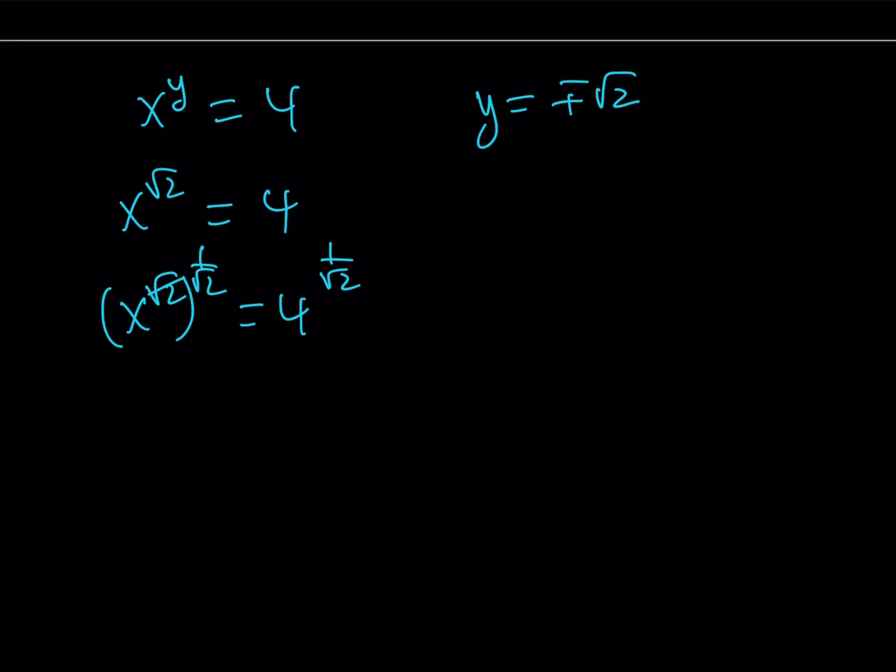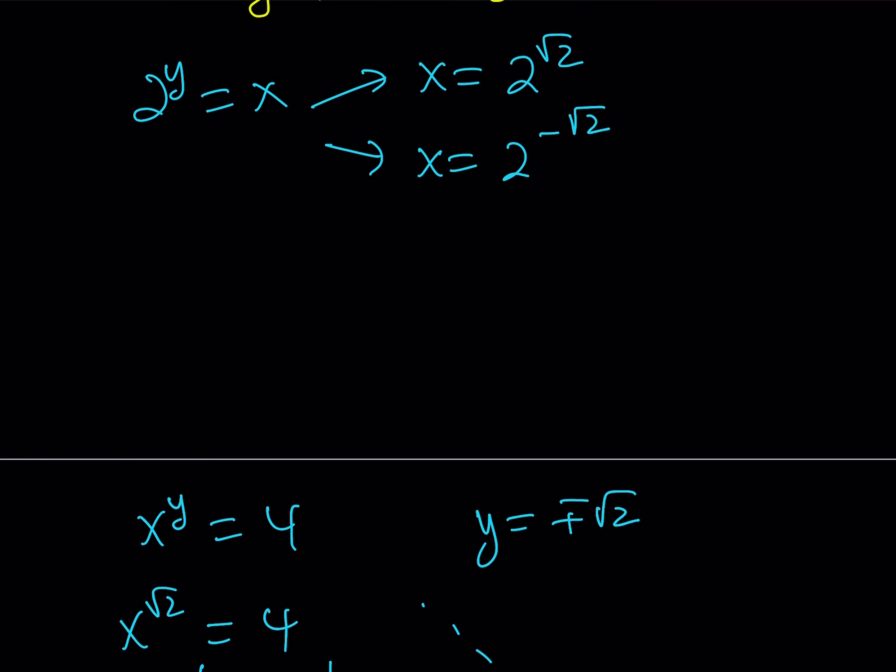And then, these two are going to cancel out, leaving us with x. So, that's kind of cool. But on the right-hand side, we can write the 4 as 2 squared. And then, by multiplying the exponents, we get 2 to the power 2 over root 2. And that can be written as 2 to the power root 2. So, eventually, we're going to arrive at the same answer, and the same thing goes for the negative solution. But it's just a little longer, so I like this method better.